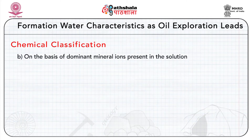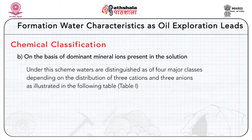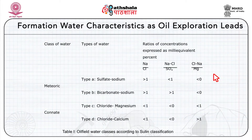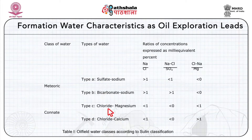The other scheme, proposed by Sulin in 1946, classifies waters on the basis of dominant mineral ions present in solution. Under this scheme, waters are distinguished into four major classes depending on the distribution of three cations and three anions, as shown in tabular form. Meteoric waters are of two types — sulfate-sodium and bicarbonate-sodium — while connate waters are of two types — chloride-magnesium and chloride-calcium.